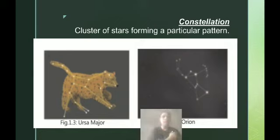Constellation is a cluster of stars forming a particular pattern. It is a group of stars. There are two constellations given for your help: Ursa Major constellation and Orion. These are the imaginary lines which you are seeing that connect the stars and form a particular pattern or design.